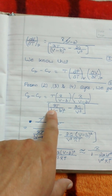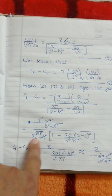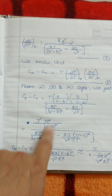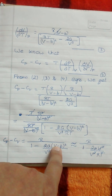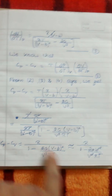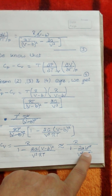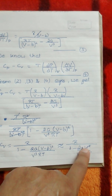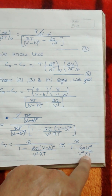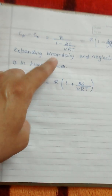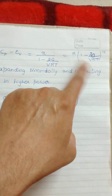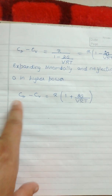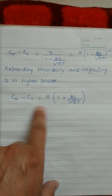Taking b as common, since b is very small compared to the volume we ignore it, and we get 2a/V squared upon V cubed. After simplification, R squared T is left. Taking the numerator and expanding through the binomial theorem, ignoring higher-order terms in a, we arrive at this very important equation for the specific heat difference for a Van der Waals gas.